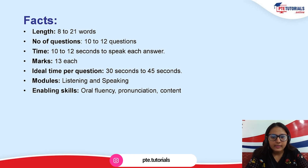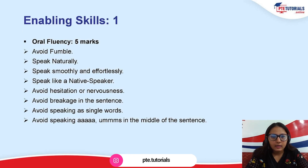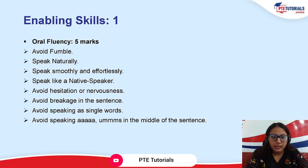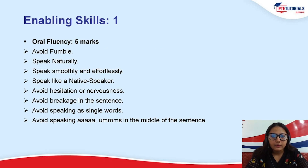Now, understanding exactly what fluency is — if we avoid fumbles while speaking any sentence, if we try to speak naturally, smoothly, effortlessly just like a native speaker, then we will get 5 out of 5 in fluency.